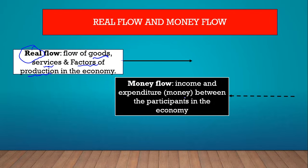If money is flowing in the economy — remember, money can flow as income or expenditure — then we have a money flow. The money flow is indicated by the dotted line, as you can see on the diagram. Let's go to the circular flow diagram to see this in practice.